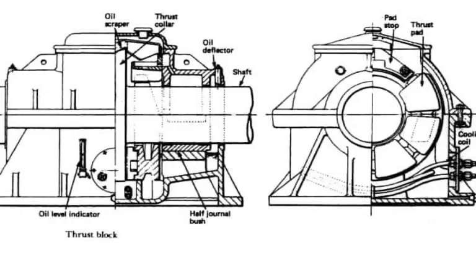Oil from the top cover cascades over the thrust pads, bearings, and falls back to the sump. The top cover acts as a pad stop. The thrust shaft transmits thrust onto the thrust collar, and hydrodynamic fluid film wedges separate the thrust pads and thrust collar. The thrust pad transmits thrust to the lower half of the casing, which is connected to the ship's hull, and the ship moves when the thrust is transferred to the hull.